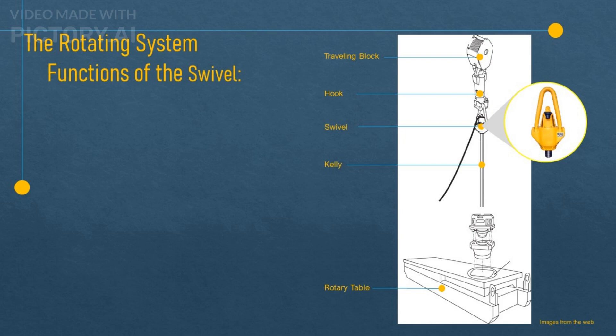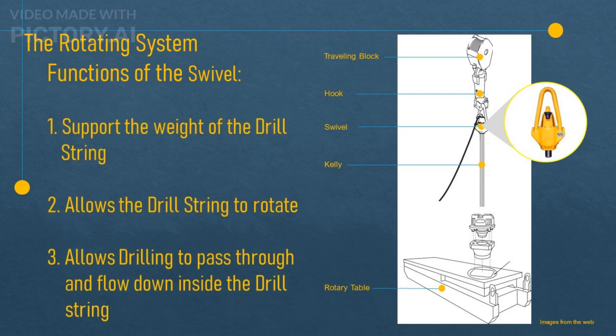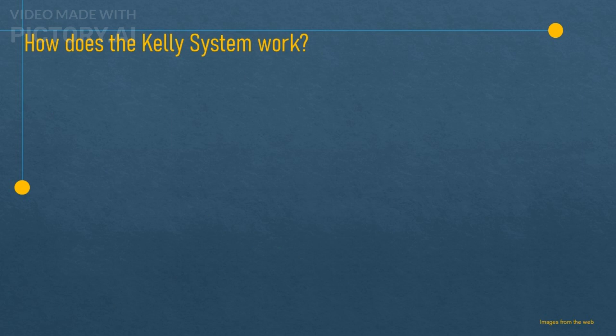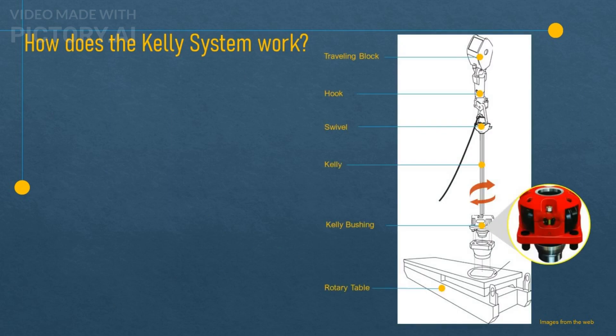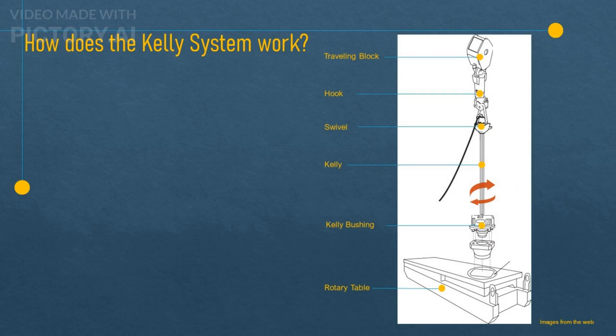The swivel has three main functions: it supports the weight of the drill string and allows it to move up and down with the traveling block; it allows the drill string to turn; and it provides a pressure-tight seal for drilling fluid to flow down the drill string. As the rotary table turns, it rotates the Kelly bushing, which is a device that grips the Kelly and transmits its rotation. The Kelly then rotates the drill string and the drill bit, which break up the rock formation.